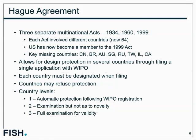The Hague Agreement allows an applicant to file one application to protect a design in several countries. The application is filed with WIPO — the same organization that manages the PCT. In the filing, you must designate each country where you'd like protection. Because it's a registration system, WIPO publishes the design and notifies the countries you've opted into. Countries then have the ability to refuse protection, and notably, if a country doesn't refuse, the protection is valid in that country.